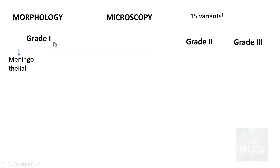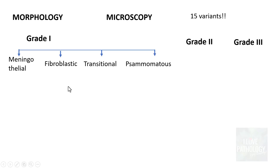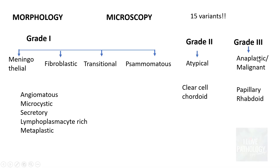Grade 1 Meningiomas, which are benign, include Meningothelial, Fibroblastic, Transitional, and Psammomatous Meningiomas as common subtypes, as well as Angiomatous, Microcystic, Secretory, Lymphoplasmacyte-rich, and Metaplastic Meningiomas. Grade 2 includes Atypical Meningioma, along with the clear cell and cordoid variants. Grade 3 Anaplastic Meningiomas include the papillary and rhabdoid types. In total, there are 15 variants of Meningioma.